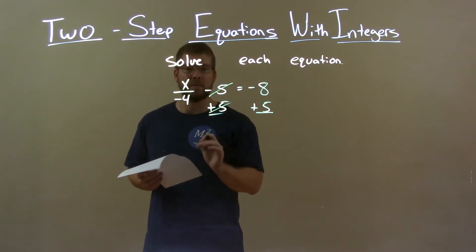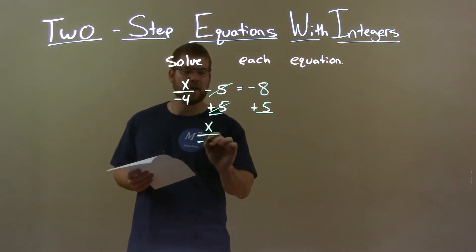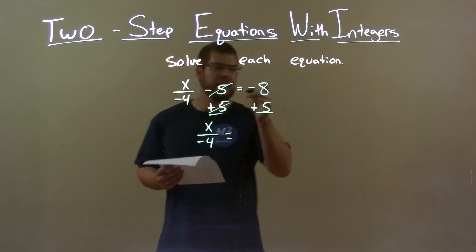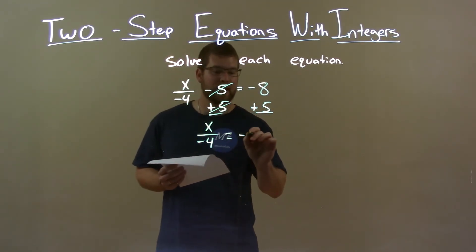The 5's on the left will be eliminated, leaving the x over negative 4 on the left. Negative 8 plus 5 is negative 3.